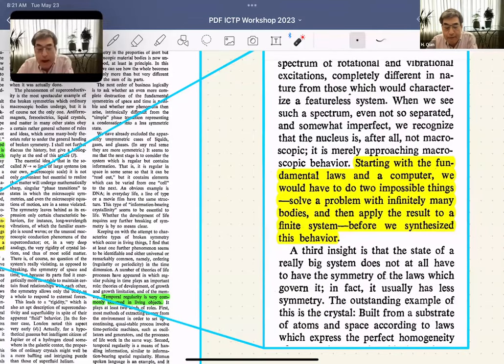I lift this paragraph from Anderson's 1972 famous paper. Starting from the fundamental law—in my case the theory of probability—and doing limiting theorems, we must do two things: solve a problem with infinitely many bodies and apply the result to finite systems. Sometimes infinity and even 30 or 15 is sufficient to understand real systems and synthesize emerging behavior.